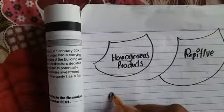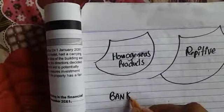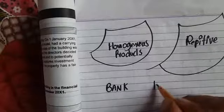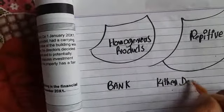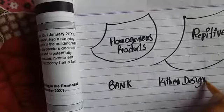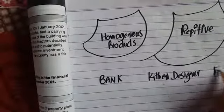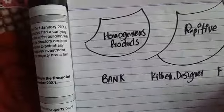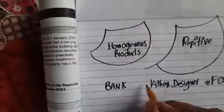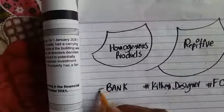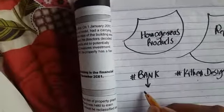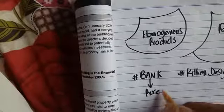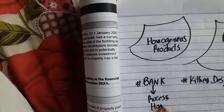Using examples from the Kaplan book: the first example is a bank, the second is a kitchen designer, and the third is a food manufacturer such as tea or rice production.